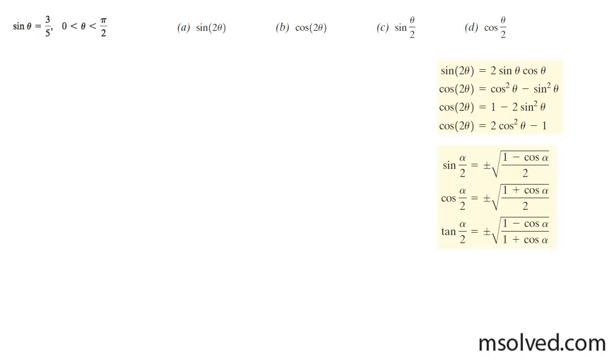Let's find the double angle for both the sine and cosine, and the half angle for both the sine and the cosine of this current angle.